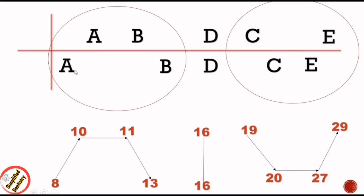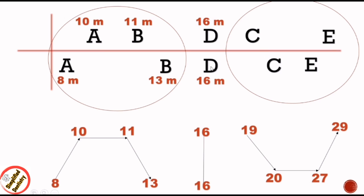The mean eruption age of lower central incisor is 8 months, upper central incisor is 10 months, upper lateral incisor is 11 months, and lower lateral incisor is 13 months. For both upper and lower first molar the mean eruption age is 16 months. Upper canine is 19 months, lower canine is 20 months, lower second molar is 27 months, and upper second molar is 29 months.